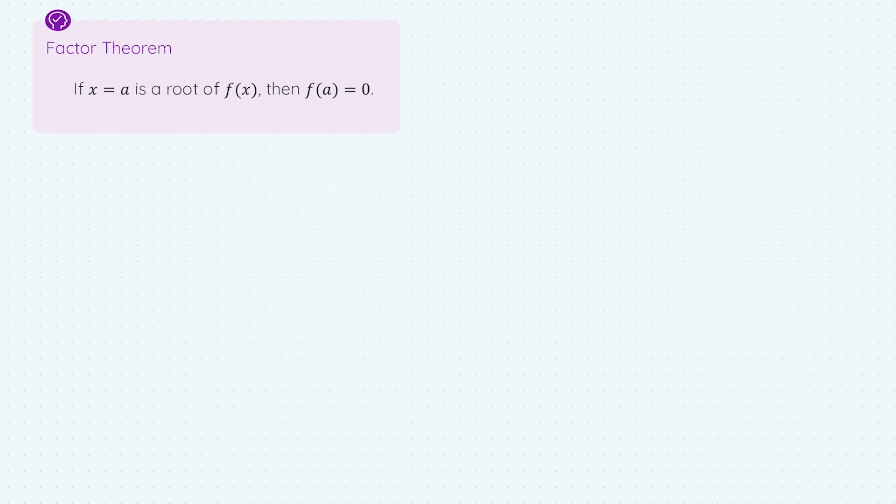We're told about the factor theorem here and it says if x equals a is a root of a function f(x), then f(a) equals zero, and f(a) means we sub a in for x into the function. I'm going to do a quick numerical example just to explain what this means.